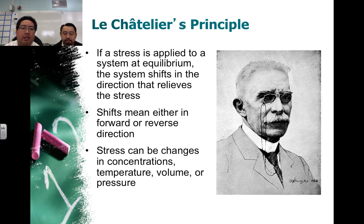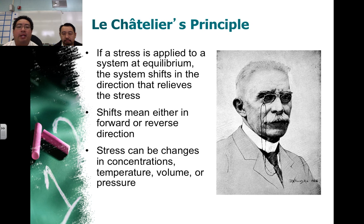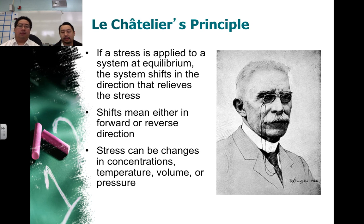So, if we're going to talk about how equilibrium systems react to changes, we're talking about Le Chatelier's principle. He basically stated that if you apply a stress to a system in equilibrium, the system will shift to relieve the stress. And it is quantifiable, and this shift means that the forward or reverse reaction will occur in order to cause less stress on the system.